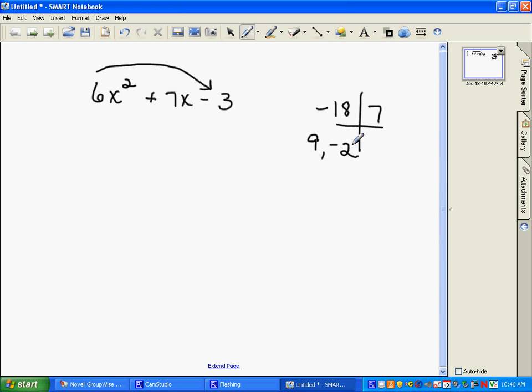Now in the last problem, we just stuck those numbers into a set of parentheses. In this one, we will rewrite our problem using those two numbers in that spot. So we will have 6x squared plus 9x minus 2x minus 3.